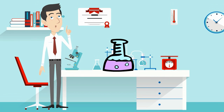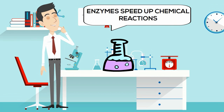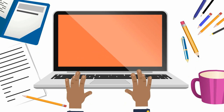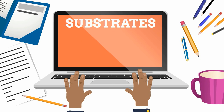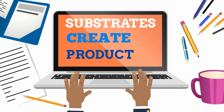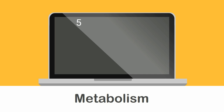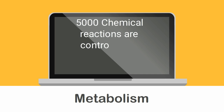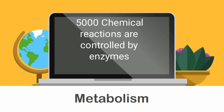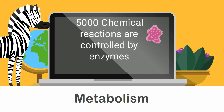Enzymes are crucial for metabolism. Enzymes help speed up chemical reactions. The molecules upon which enzymes act are called substrates, and the enzyme converts the substrates into a different molecule known as a product. Almost all chemical reactions in the cell need enzymes in order to occur at a rate fast enough to sustain life. There are over 5,000 chemical reactions that occur in plants, animals, and microbes that are controlled by enzymes.